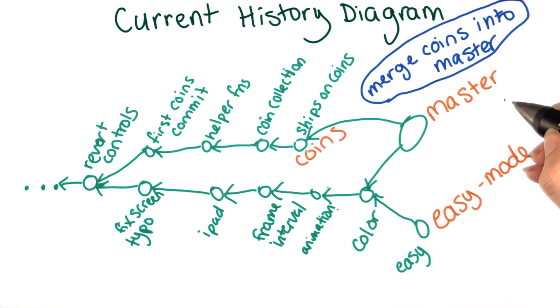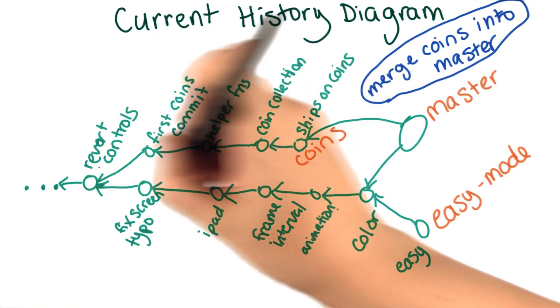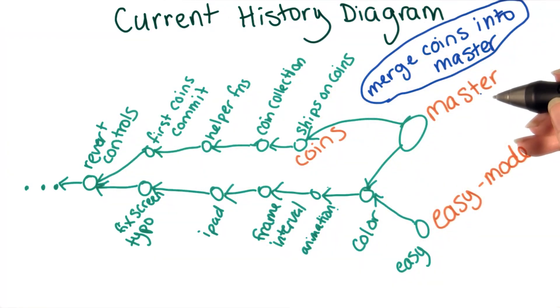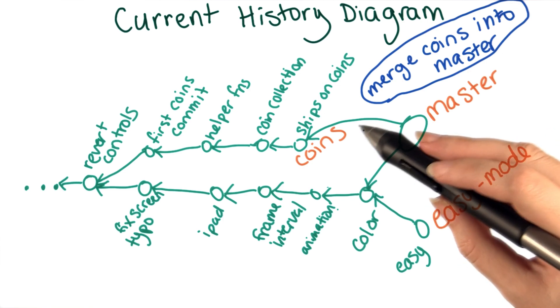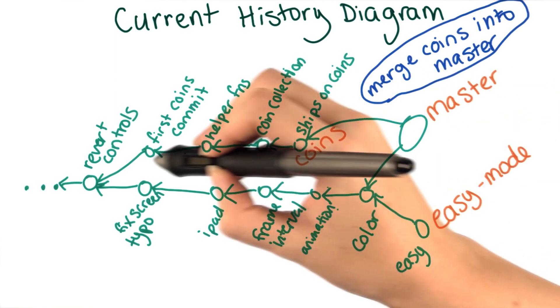After the merge, the master branch will include all the changes that it had before, plus the changes from the coins branch. It's sort of like creating a new commit with all the changes from the coin branch, except that I still have access to each of these old commits.